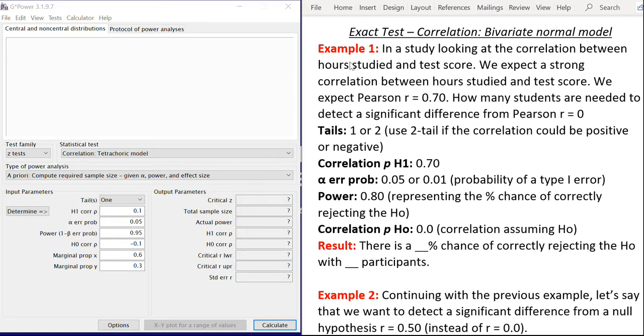So we have an example here. We have a study looking at the correlation between hours studied and test score. Of course with a study looking at correlation between these two variables, we would expect a fairly strong correlation. So we're going to say here that we expect a Pearson correlation value of r equals 0.70. The question is how many students are needed to detect a significant difference from a Pearson r equal to zero.